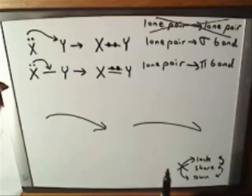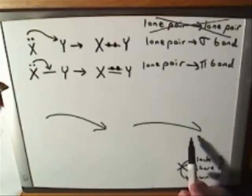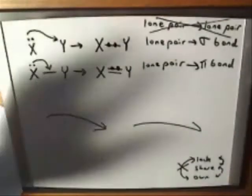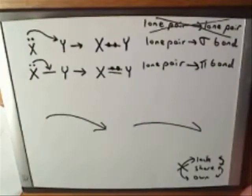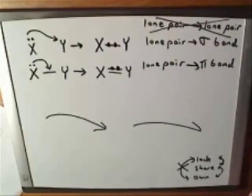If we were going to work with any single-headed arrows, that would indicate the movement of only a single electron. But that's a topic for another series of videos — we won't be dealing with that in this series.